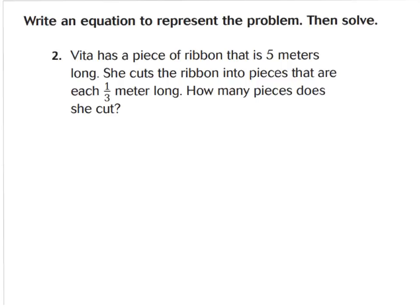For number two, it says Vida has a piece of ribbon that is five meters long. She cuts the ribbon into pieces that are each one third of a meter long. How many pieces does she cut? This is a division problem because we start with our whole number, which is five. Cut is my clue word that we're putting it into parts, and each piece is one third of a meter long. Therefore, my equation should be five divided by one third equals N. N will tell me how many one third parts we have.